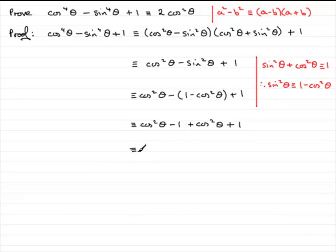And you can see it taking shape now, I think, because we've got cos²θ + cos²θ is 2cos²θ, and -1 + 1, well, that's 0. So we've got it. There you go, 2cos²θ.